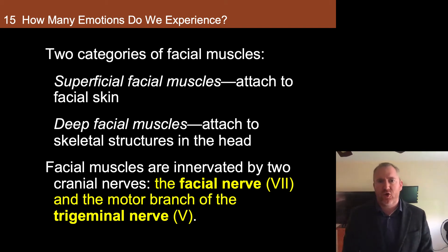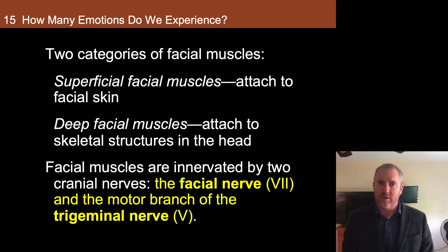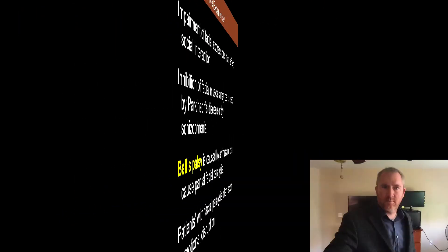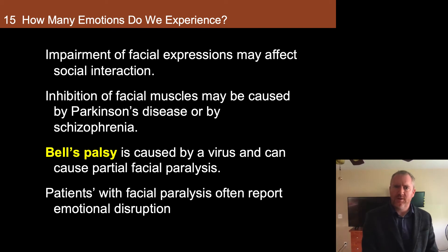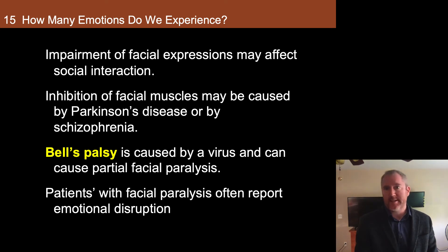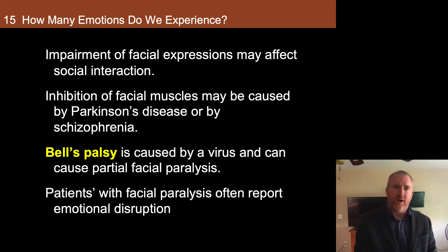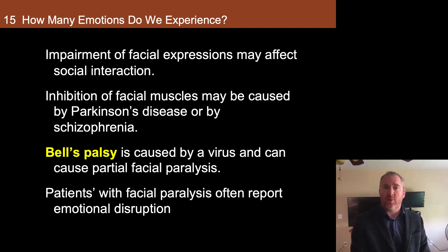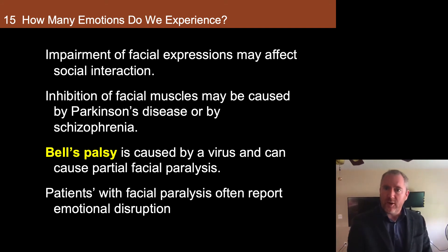The muscles and nerves responsible for facial expression are well characterized. There are superficial facial muscles, which attach to facial skin, and deep facial muscles, which attach to skeletal muscle in the head. There are also two main cranial nerves that innervate the facial muscles — the facial nerve and the trigeminal. Impairment of facial expression is known to affect social interaction. Inhibition of facial muscles may be caused by Parkinson's disease, schizophrenia, and a variety of other disorders including stroke. Bell's palsy is a well-known phenomenon caused by a virus that can cause partial facial paralysis. Patients with facial paralysis often report emotional disruption and significant issues with communication.